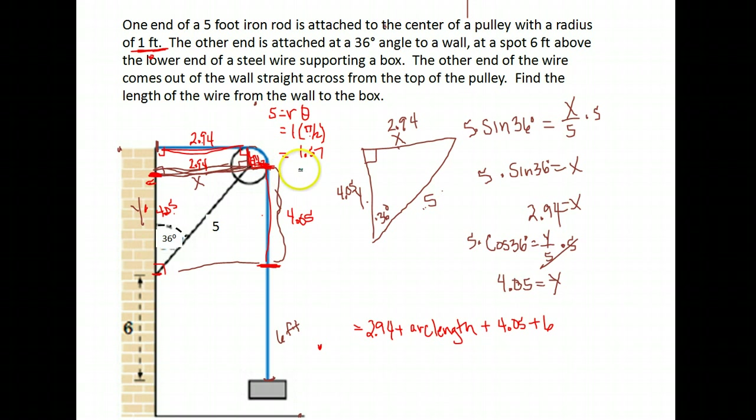My arc length is 1.57, and I can bring that down here and finish my problem. My length of wire is 2.94 to get from the wall to the top of the pulley, plus 1.57 to get this curve on the pulley, plus another 4.05 feet to get down to my 6-foot mark, and then that 6 feet hanging on the bottom.